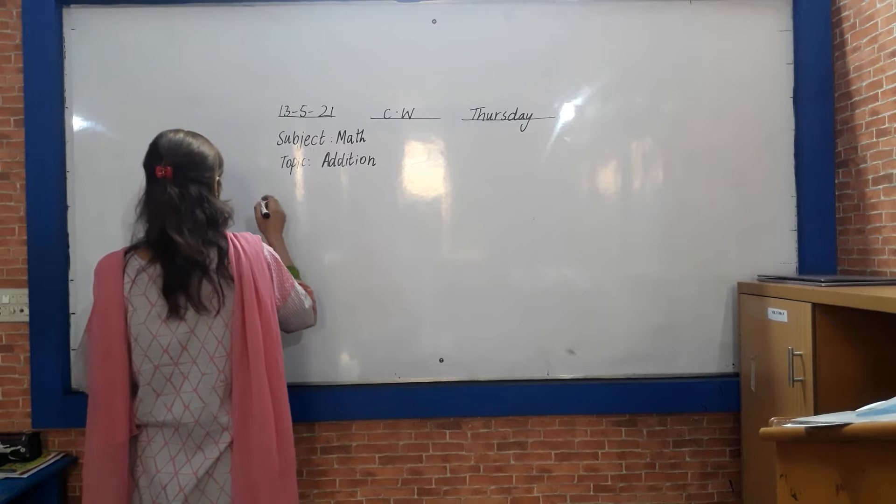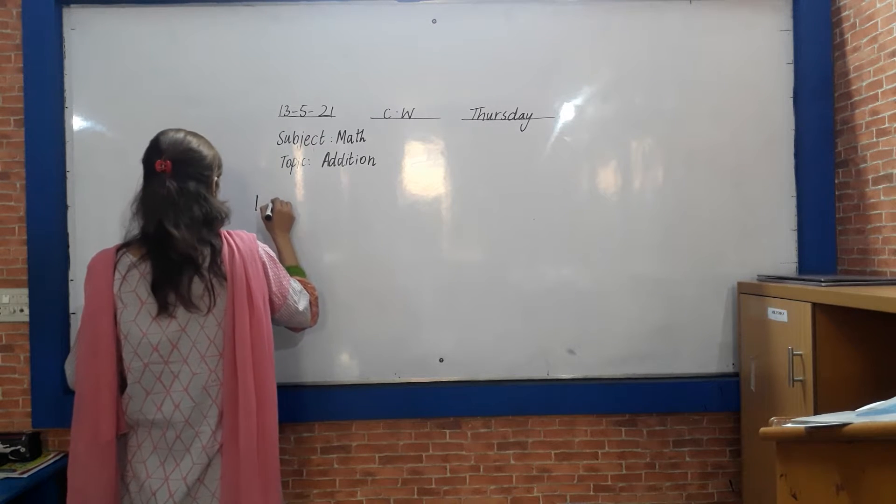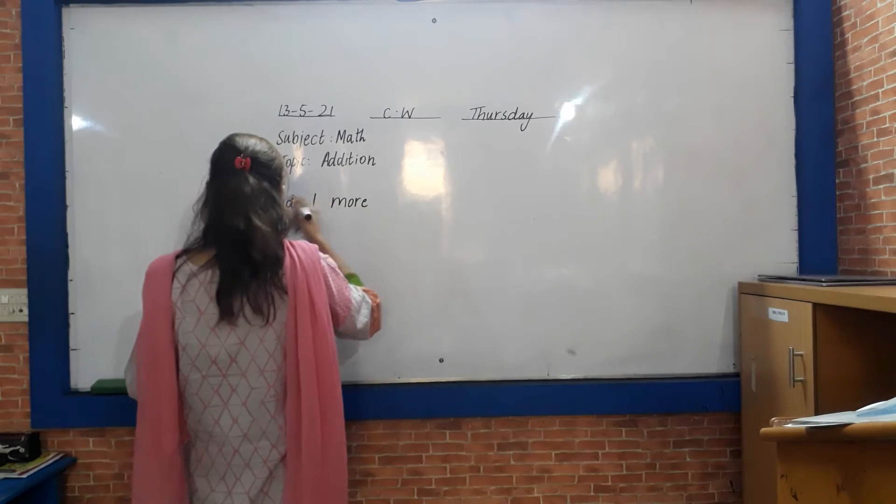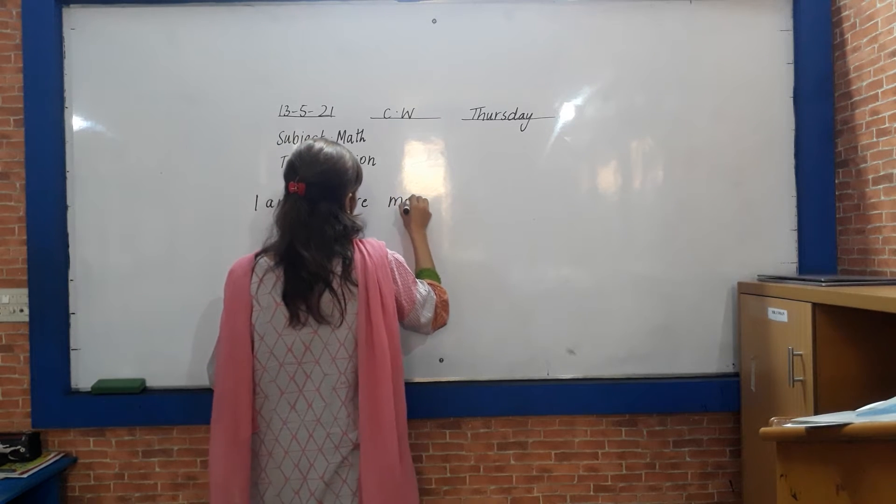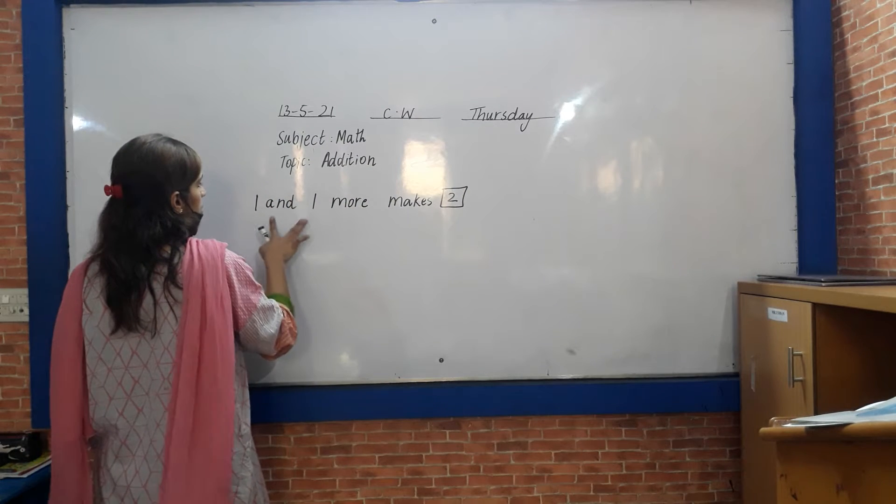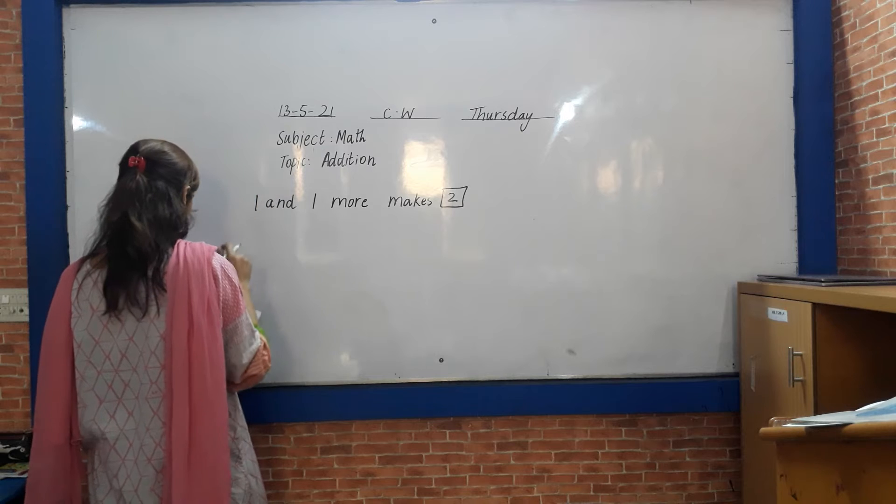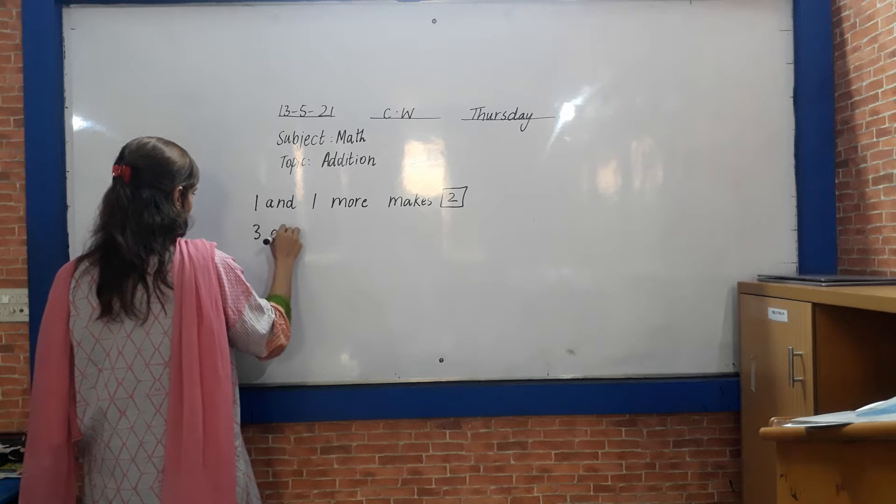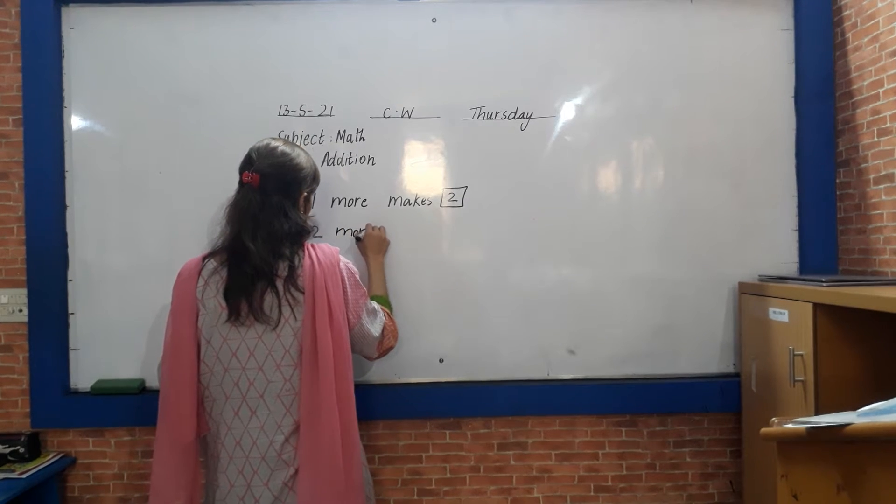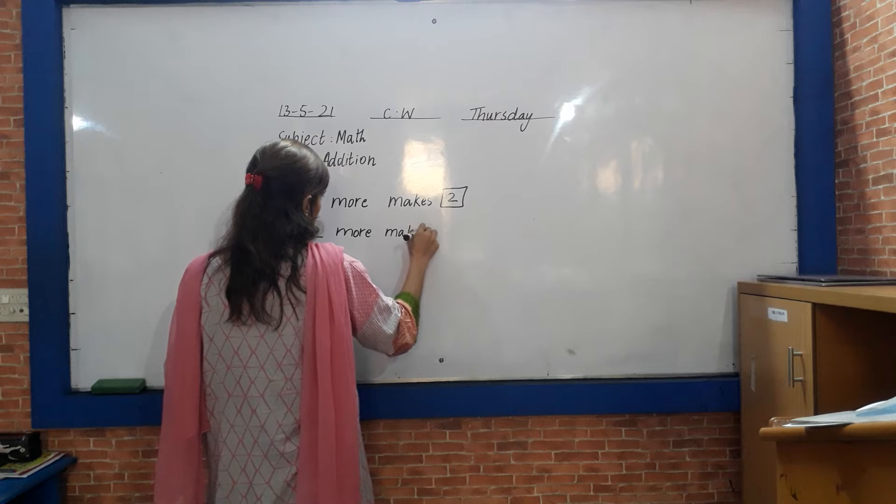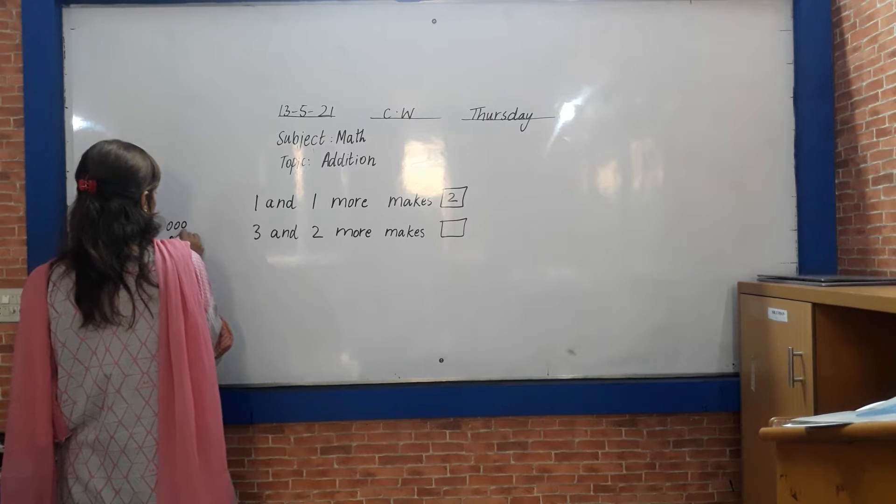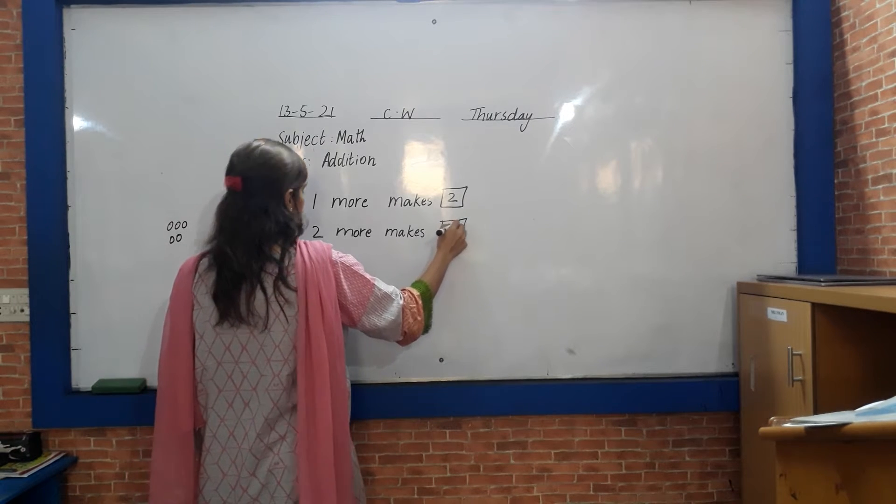One and one more makes two. One and one more makes two. Three and two, four makes five. One, two, three, four, five. It will make five.